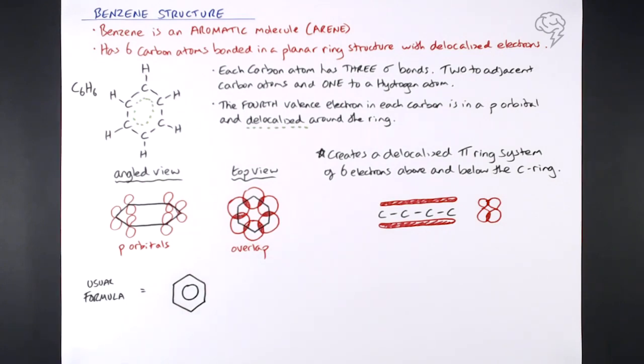The hexagon represents the six carbon atoms. The ring represents the delocalized pi system of those six electrons that are mooching around between all of those overlapping p orbitals.